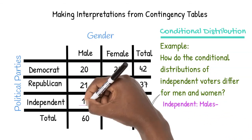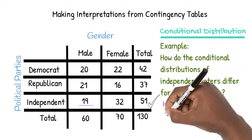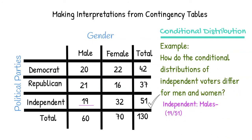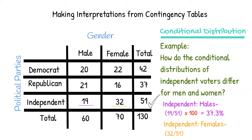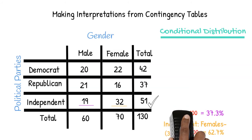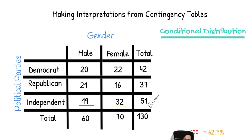We see that 19 of these voters are male — 19 out of 51 Independent Voters. We multiply this by 100 to convert to a percent and get 37.3%. We do the same for females by dividing 32 by 51 and multiplying by 100 to get 62.7%. Being able to calculate conditional distributions gives us more insight into our data, showing us exactly how categories are broken up.